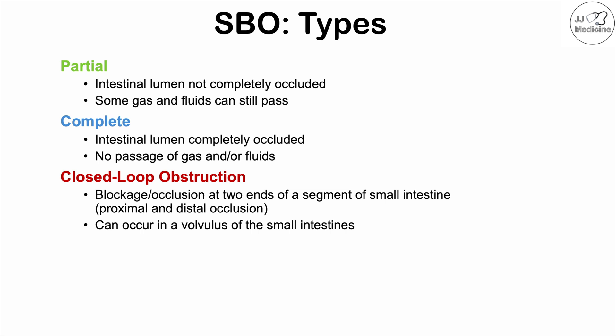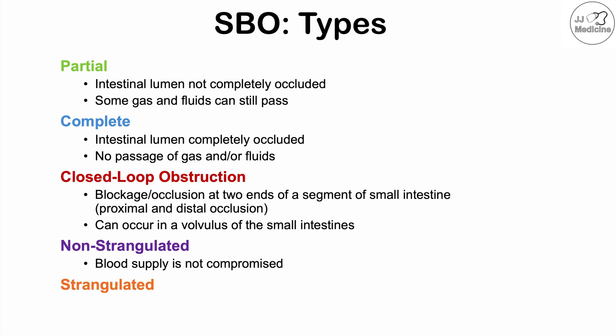A closed loop obstruction can occur in a volvulus of the small intestines. We also classify small bowel obstructions as non-strangulated, meaning the blood supply to the small intestine is not compromised, or strangulated, meaning the blood supply is compromised. These classifications will determine the management of the small bowel obstruction.